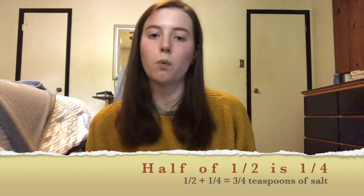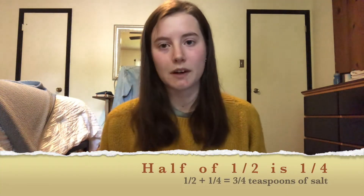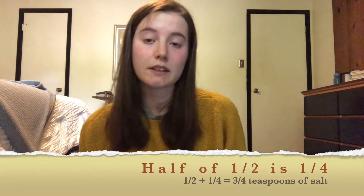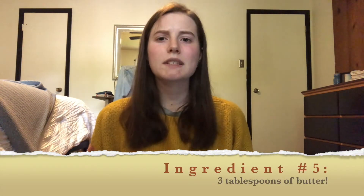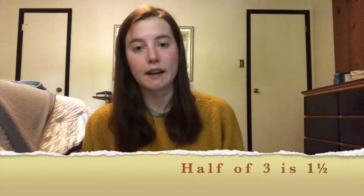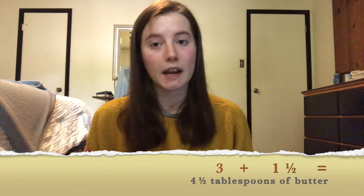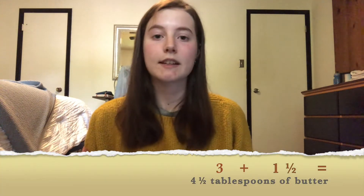The next two are a little bit trickier. We have half of a teaspoon of salt. What's half of a half? That's a fourth. So one half plus one fourth is three fourths teaspoons of salt. And then next we have three tablespoons of butter. What's half of three? Half of three is one and a half. So three plus one and a half is four and a half tablespoons of butter.